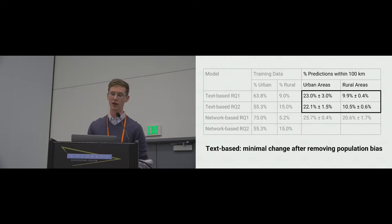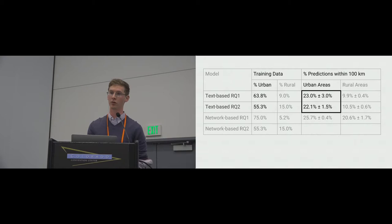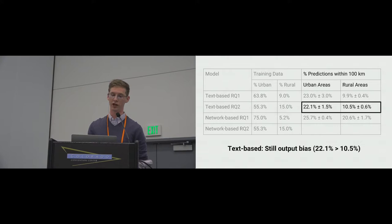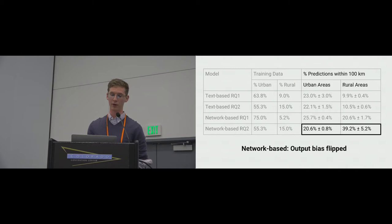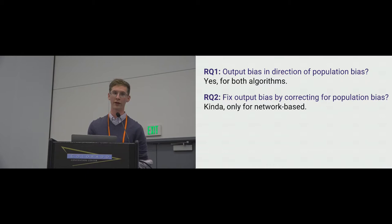For the text-based algorithm, we see minimal change compared to research question one: precision in urban areas goes down slightly, as you might expect, because we reduced the proportion of urban training data, but precision in rural areas does not rise really at all. We added 50% more rural data and saw almost no change in performance — the output bias remains relatively unchanged despite removing population bias. Something else is going on beyond just population bias. However, for the network-based algorithm, precision in rural areas increases greatly and actually exceeds the precision in urban areas. So for the network-based algorithm, the original output bias seemed to be fully due to population bias.